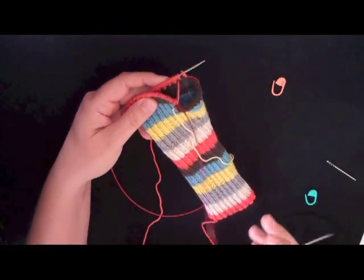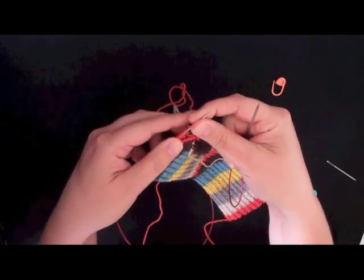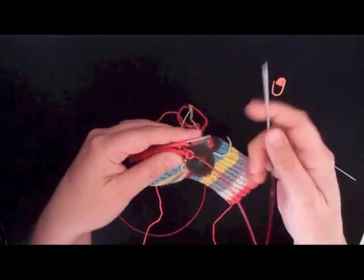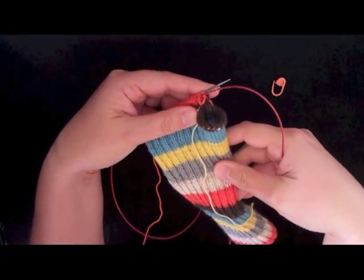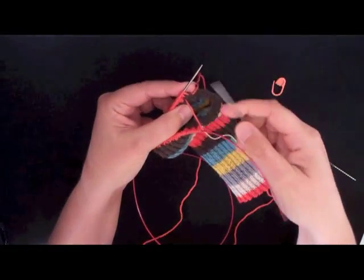So let me show you how to do that. The instructions tell you to turn your work so that you're looking at the inside of the mitt. And all I mean by this is that normally when you're working in the round you're looking at the right side, you're looking at the outside of the mitt. At the moment I want you to turn it so that you're looking at it like this.